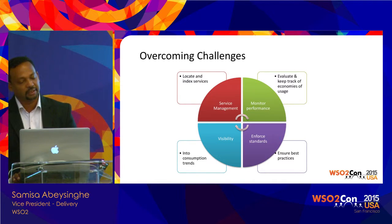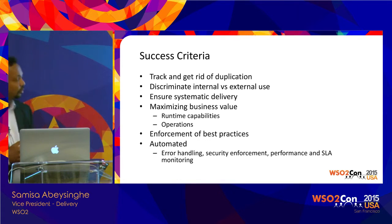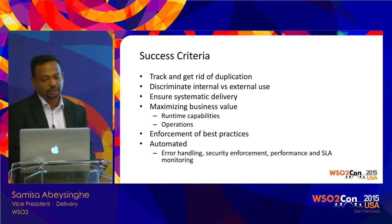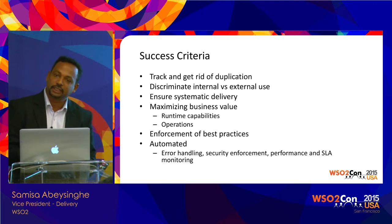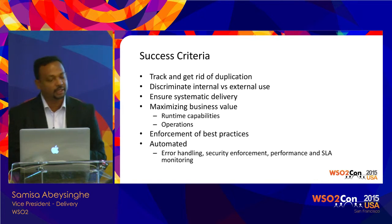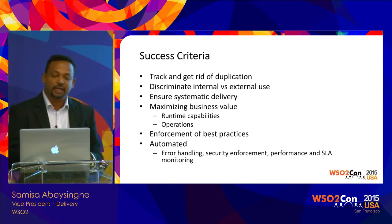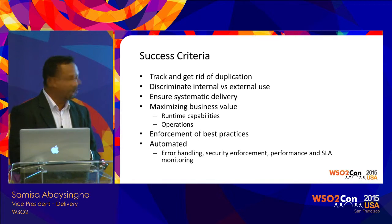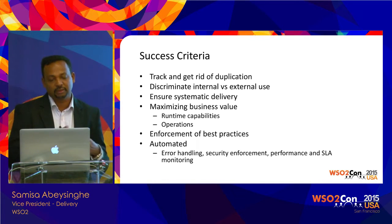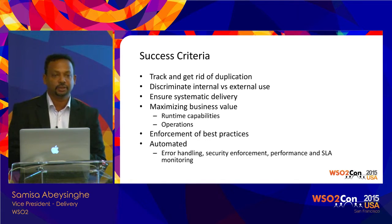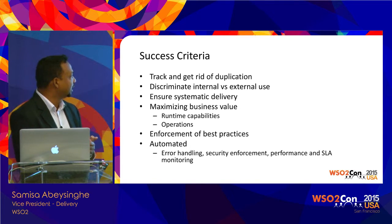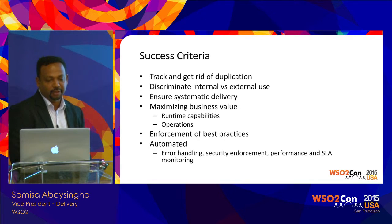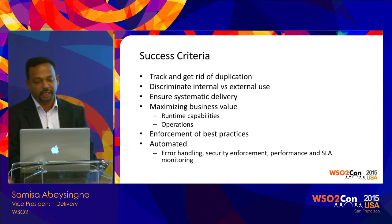Once you have the system in place, how do you measure whether you are making progress? If you are successful, there would be no duplication in terms of services — people will not re-implement the same services or re-expose the same API repeatedly. Rather, they will think about reuse rather than duplication. When you have APIs and services, you also need to know the percentage of internal versus external usage, and whether you understand the balance between what is being used inside and outside.